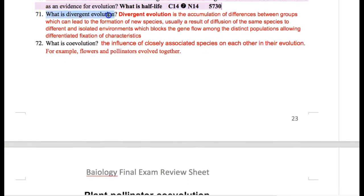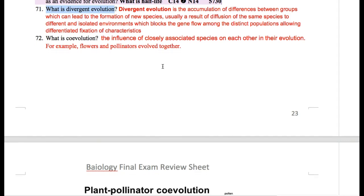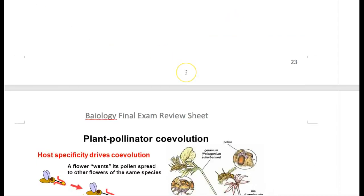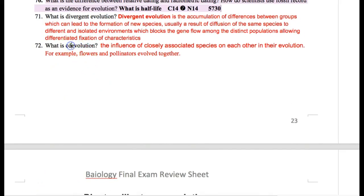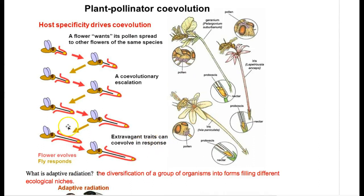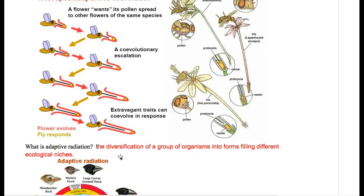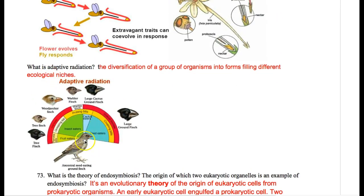What is divergent evolution? That's when you have one common ancestor that diverged into two different species. You get new species from diverging from the same common ancestor. What is co-evolution? Co-evolution — a typical example is flowers and pollinators. As a flower changes, the pollinator also changes with it; it happens side by side. What is adaptive radiation? Adaptive radiation is where you start with one species and it adapts and radiates into many different species within that area.